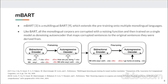MBART is a multilingual BART which extends pre-training to multiple monolingual languages, unlike BART which only uses English. Like BART, all monolingual data are corrupted with a noising function and fed with a language tag for each language included in the pre-trained model. It is trained as a single model as a denoising autoencoder that maps corrupted sentences to the original sentences they are derived from.